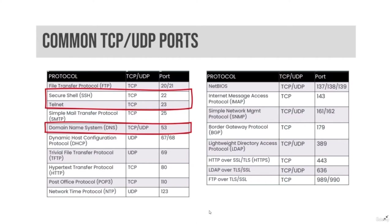SSH includes SFTP and SCP for transferring files. SSH can also be used to securely tunnel other protocols, such as HTTP. SSH servers listen on TCP port 22 by default.